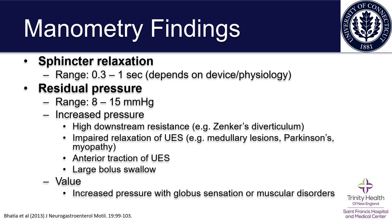When you see a residual pressure above 15 millimeters of mercury, it may suggest a high downstream resistance — an example would include Zenker's diverticulum as the upper esophageal sphincter tries to squeeze against a potential obstruction. Another option is impaired relaxation of the upper esophageal sphincter. In patients with medullary lesions, Parkinson's disease, or other myopathies, they may not be able to adequately relax their upper esophageal sphincter, so both residual and baseline pressures may be higher.